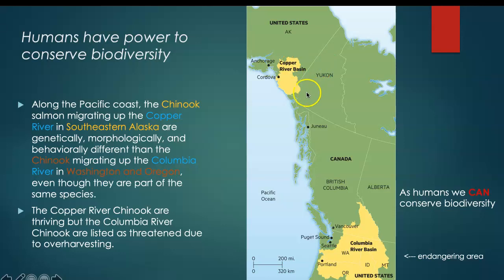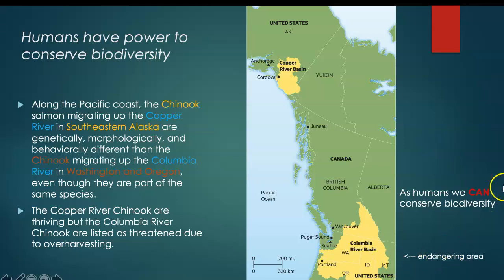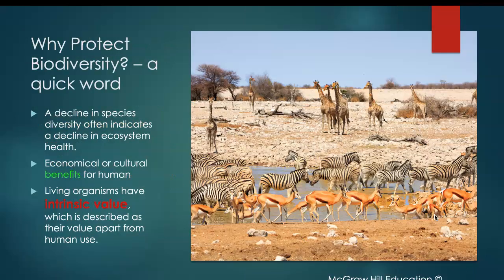For example, there are two species of salmon — one living in the Copper River Basin, another in the Columbia River Basin. They are the same species, but one is flourishing and one is declining due to human activities like over-harvesting and over-exploitation. Eventually, the government put the fish on the Endangered Species List, and that helped restore the species. This example tells us that as humans, we can conserve biodiversity.